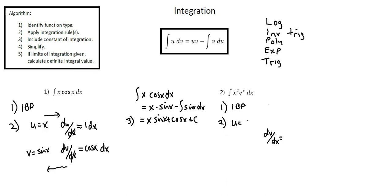So I'll assign x squared to u. du/dx is 2x. To isolate du, I'll multiply both sides by dx. So du is 2x dx.